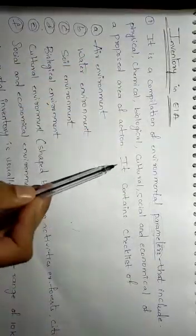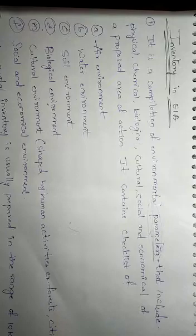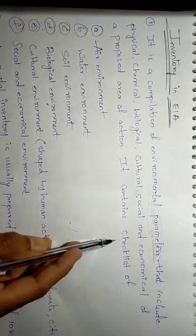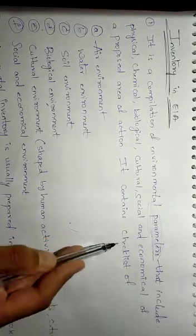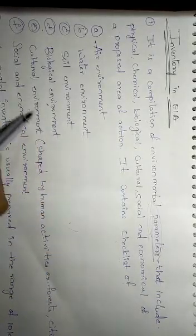And it contains a checklist. Checklists are what are the basic things that need to be included in the inventory. All these are made into a checklist. And these checklists consist of air, water, soil, biological, social, cultural environment.